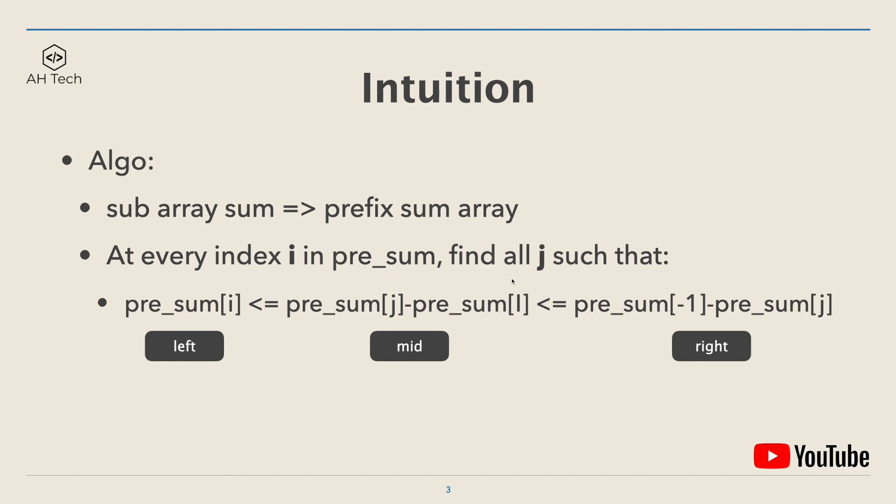Next, at every index i in the prefix sum array, which I denote as pre_sum here, we want to find all index j such that pre_sum[i] will be smaller or equal to pre_sum[j] minus pre_sum[i], and this should be less than or equal to pre_sum[-1] minus pre_sum[j]. This term represents the sum of the left, median, and right subarray of the input nums.